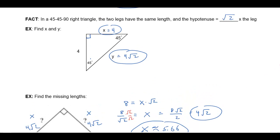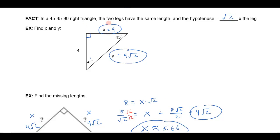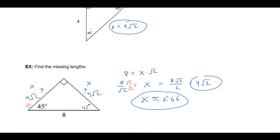So just to review then, if you have a 45-45-90 right triangle, the hypotenuse is always the length of the leg times the square root of 2. So if you know the hypotenuse, then you can just divide by the square root of 2, and that will give you the length of the leg.